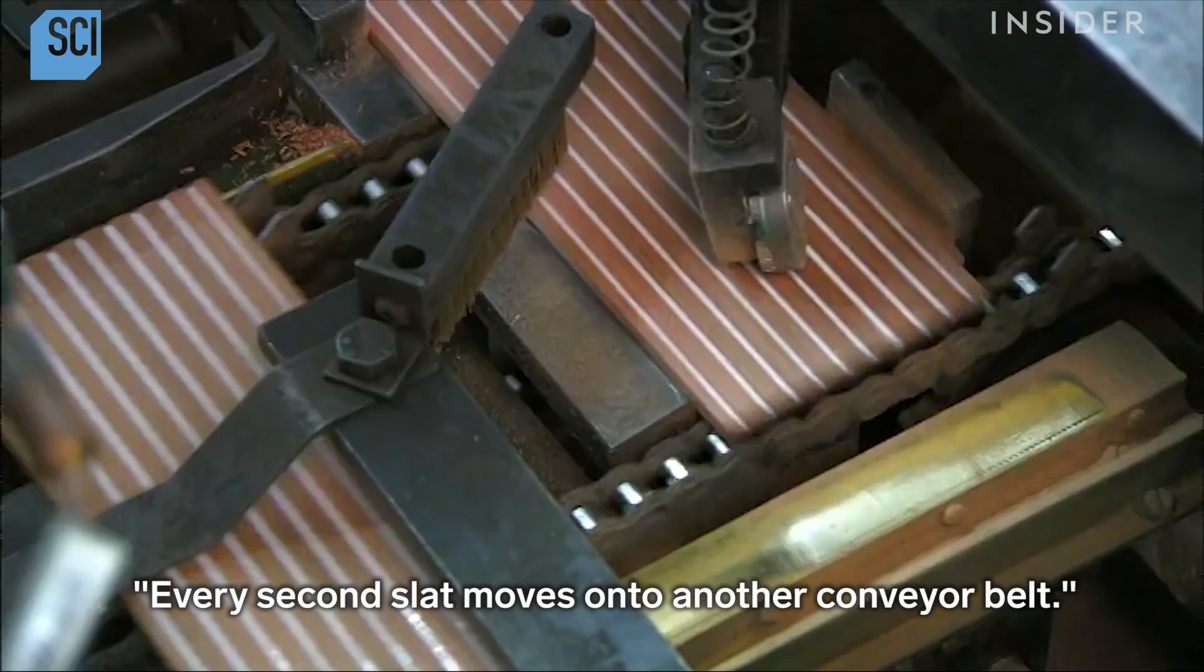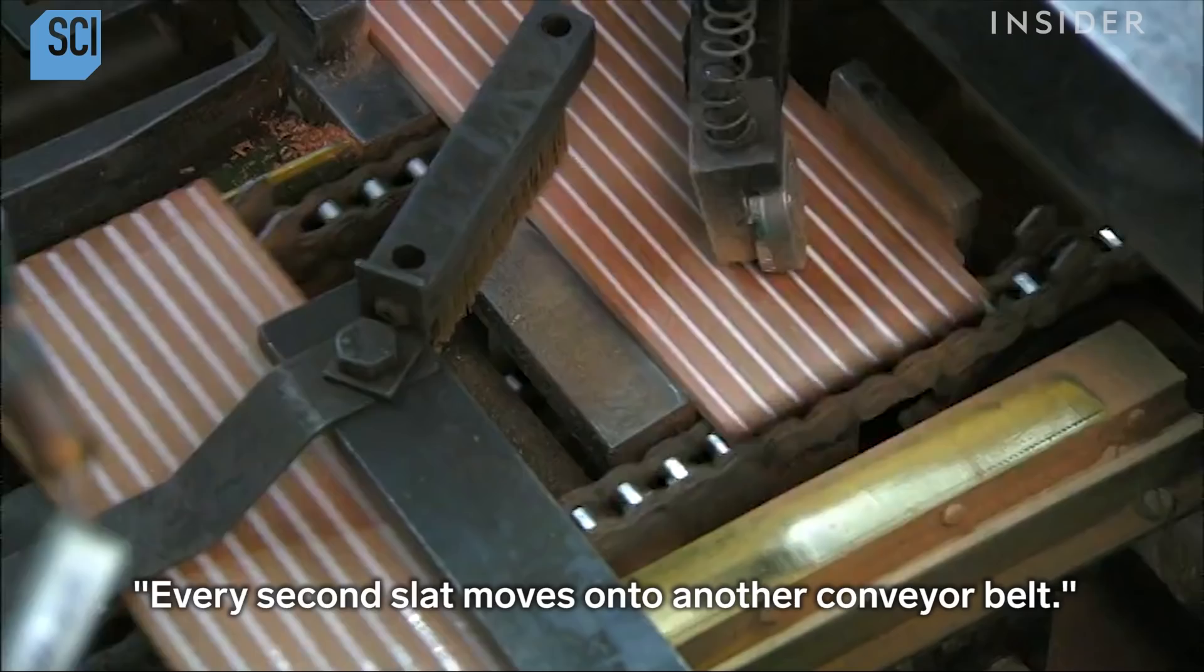Every second slat moves onto another conveyor belt. The ones that stay on this line head toward the machine that lays in the lead.